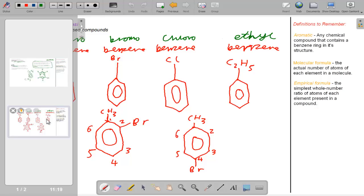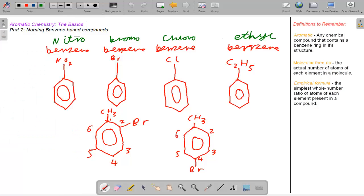So now we'll move on to different compounds that are based on benzene, like nitrobenzene, bromobenzene, chlorobenzene, and ethyl benzene. If one functional group is bonded to benzene on certain positions of the benzene ring, then it can be called one nitrobenzene or just nitrobenzene.